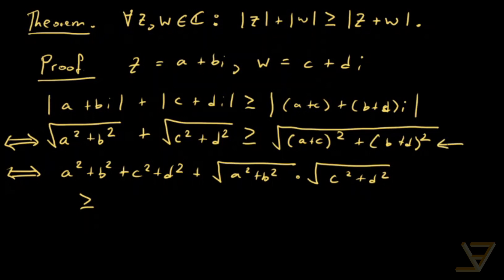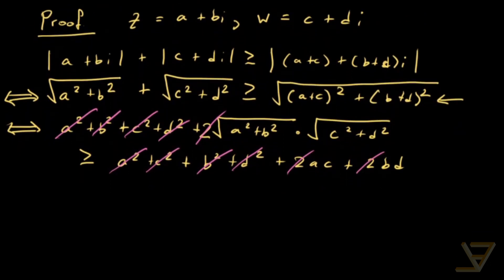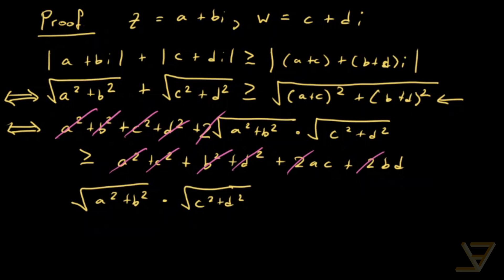Expanding the right side and removing the square root gives a² + c² + b² + d² + 2ac + 2bd. We cancel the a², b², c², and d² terms from both sides, and divide by 2. What we're left with is √(a² + b²) · √(c² + d²) ≥ ac + bd.